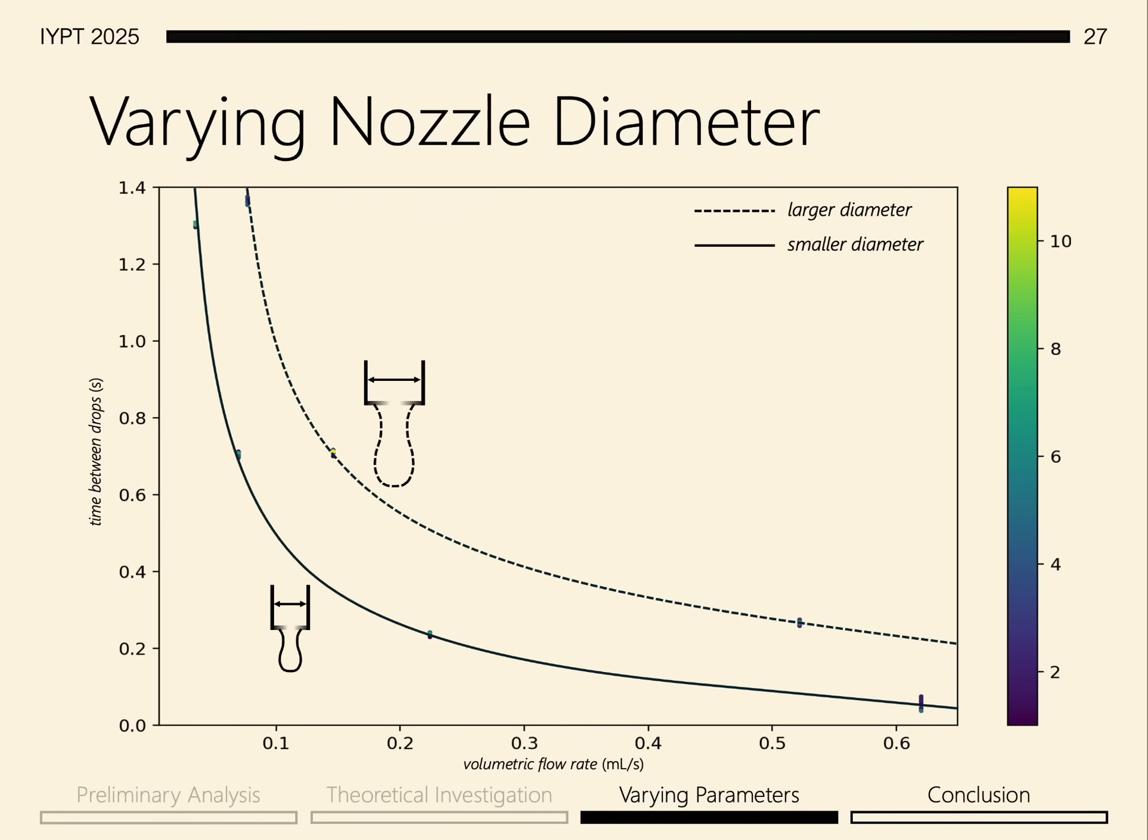With a larger nozzle circumference, there's a larger region on which the surface tension can act, giving us a larger maximum surface tension to balance weight, allowing more mass to accumulate before the droplet falls.